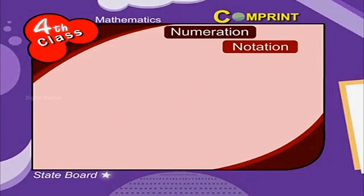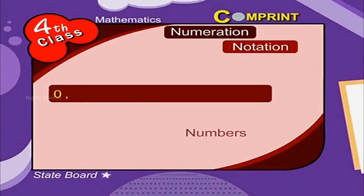Numeration and Notation. In the previous classes you have learned about numbers and their numerals. 0, 1, 2, 3, 4, 5, 6, 7, 8, and 9 are called digits and we use these digits to form numbers. Now let us recall them.